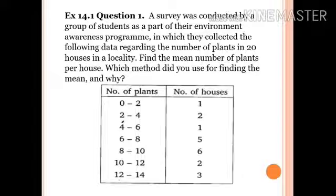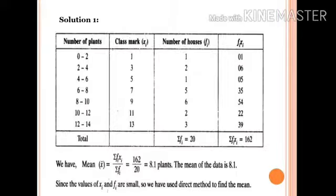Exercise 14.1 Question number 1: A survey was conducted by a group of students as part of their environment awareness program, in which they collected the following data regarding the number of plants in 20 houses in a locality. Find the mean number of plants per house. Number of plants: 0 to 2, 1 house; 2 to 4, 2 houses; 4 to 6, 1 house; 6 to 8, 5 houses; 8 to 10, 6 houses; 10 to 12, 2 houses; and 12 to 14, 3 houses.